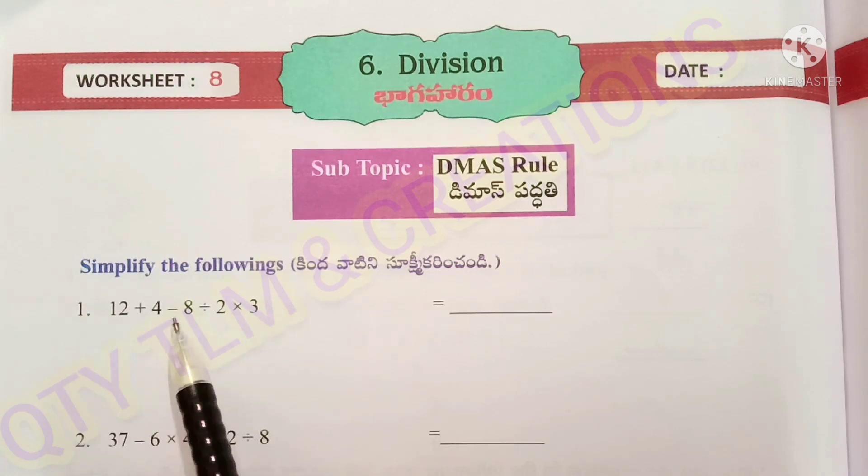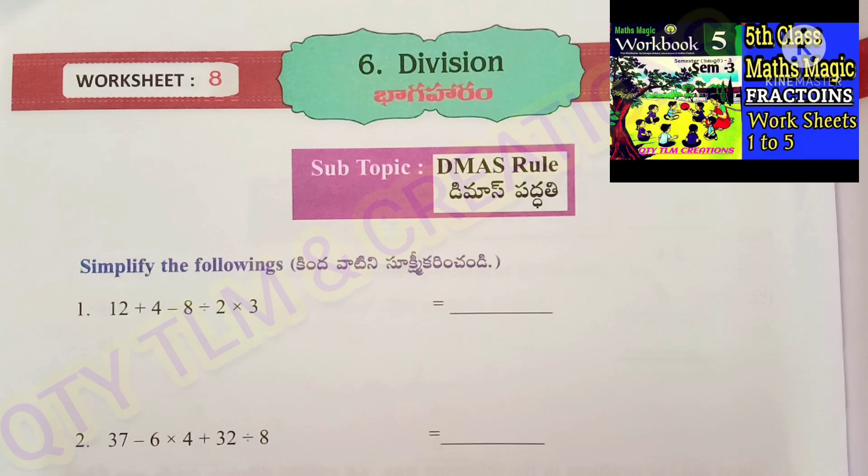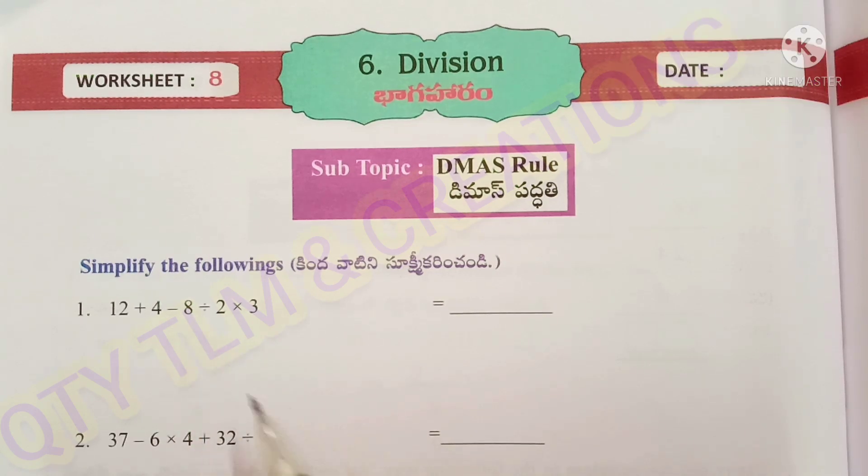12 plus 4 minus 8 divided by 2 into 3. When we want to solve this type of sums, we need to follow DMAS Rule. According to DMAS Rule, if an expression contains the 4 operations, first we have to perform division followed by multiplication, addition and subtraction.